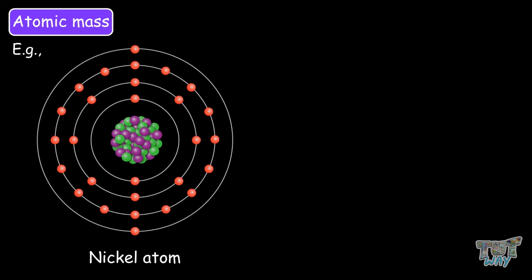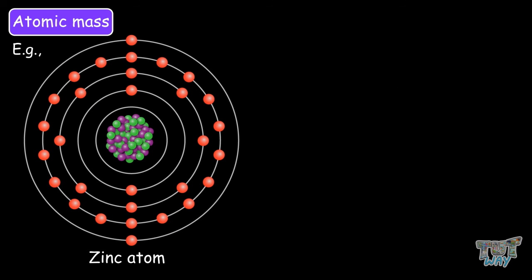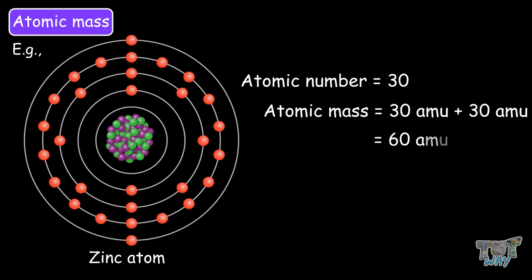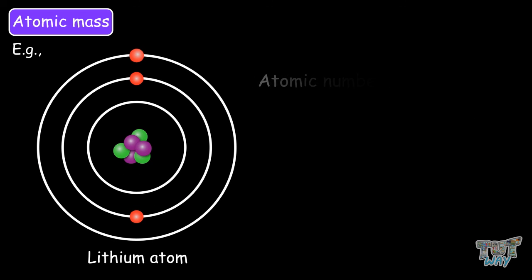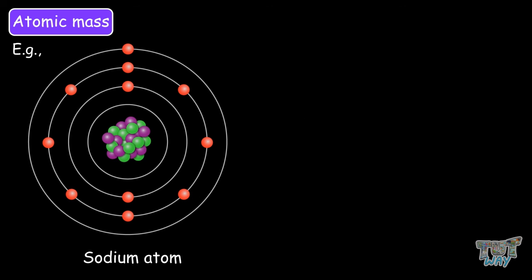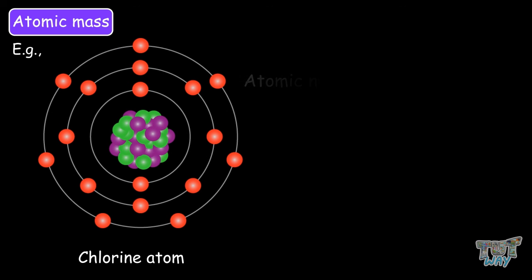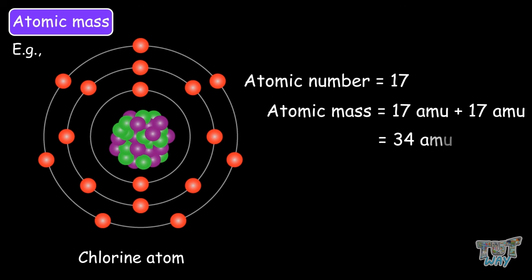Similarly, nickel: atomic number is 28, so atomic weight is 28 plus 28, which is 56 amu. Zinc: atomic number is 30, so its atomic weight will be 60 amu. Lithium: atomic number is 3, so its atomic weight will be 6 amu. Sodium: atomic number is 11, so its atomic weight will be 22 amu. Chlorine: atomic number is 17, so its atomic weight will be 34 amu.